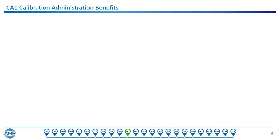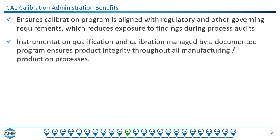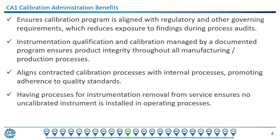Implementing Calibration Administration provides several benefits. It ensures the calibration program is aligned with regulatory and other governing requirements, which reduces exposure to findings during process audits. Instrumentation qualification and calibration managed by a documented program ensures product integrity throughout all manufacturing and production processes. It aligns contracted calibration processes with internal processes, promoting adherence to quality standards. And having processes for instrumentation removal from service ensures no uncalibrated instrument is installed in an operating process.